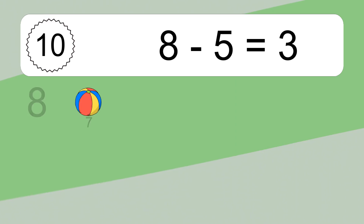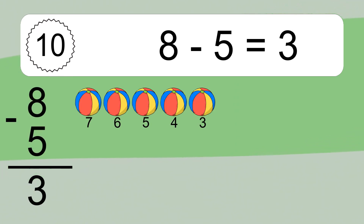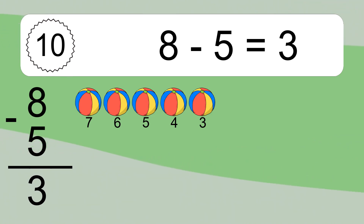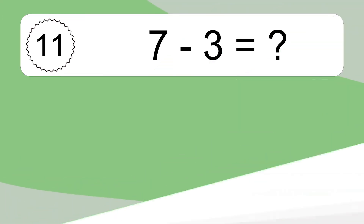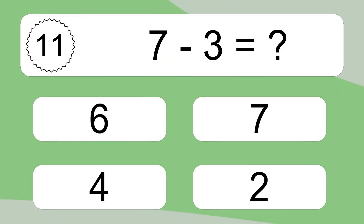8 minus 5 equals 3. Let's count it: 7, 6, 5, 4, 3. 7 minus 3 equals what?